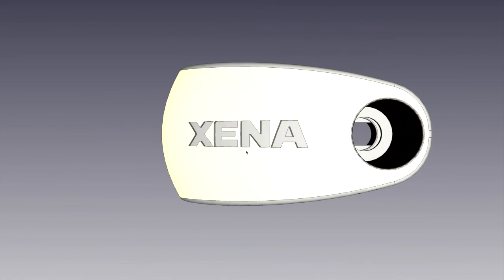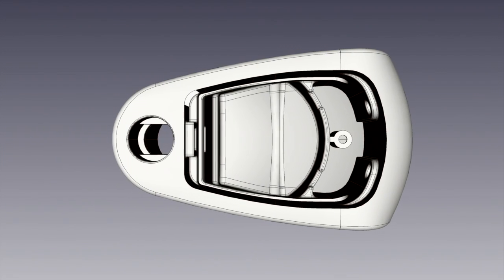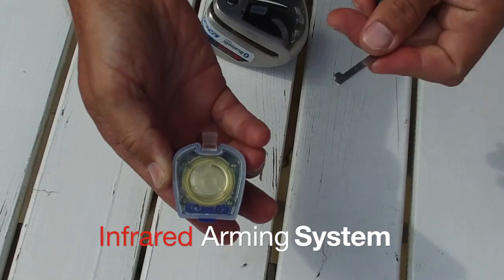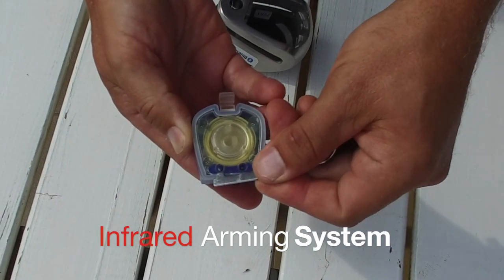Inside the stainless steel monoblock body is a space for a removable alarm module. Xena alarm modules use an infrared arming system. Opening or closing the lock has no effect on the alarm.